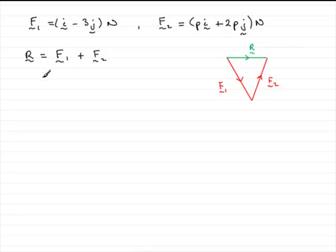So if we do that, we've got the i plus the pi, so we can put that in brackets as (1+p) in the i direction, plus, and then we've got to add the j components. We've got minus 3 here and 2p here, so I'm going to write that as (2p - 3) in the j direction.